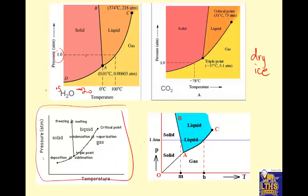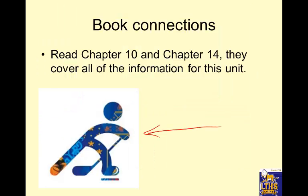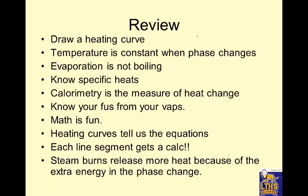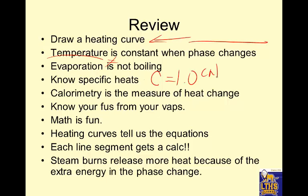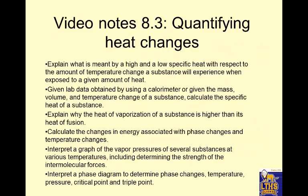Ice skating depends on this. What happens when you're ice skating? You're putting high pressure on the ice, which turns the ice into a liquid, and then you can skate on it. To review: make sure you can draw a heating curve, temperature stays constant during a flatline phase change, evaporation is not equal to boiling, know your specific heats — C for water is one calorie per gram degree Celsius. Calorimetry is how we calculate heat changes. Know your delta H of vaporization. Heating curves tell us the equations — each line segment gets a calculation, five calculations total. Steam burns release more energy because they have the phase change built in. Make sure you can do all that, and have a great day.